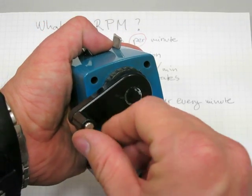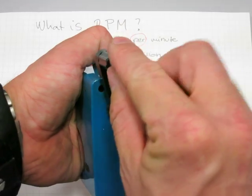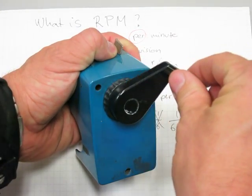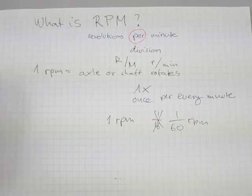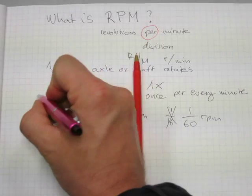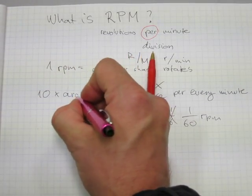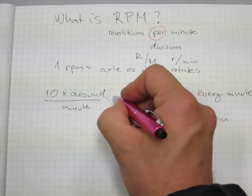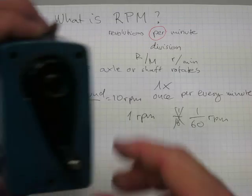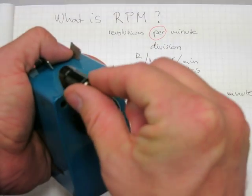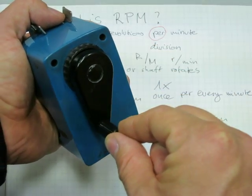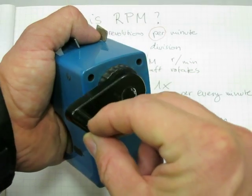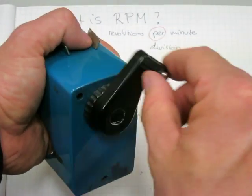The second hand was going around very slowly at one RPM. If I go a little faster and do 10 revolutions on this pencil sharpener crank per minute, that means 10 times around with the crank per every minute — that's 10 RPM. This axle is rotating at a speed of 10 RPM. If I go faster it could be 20 RPM.